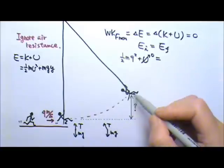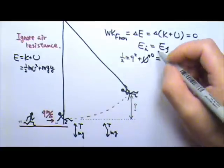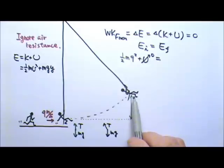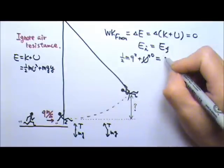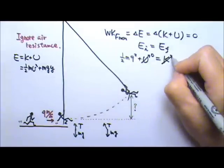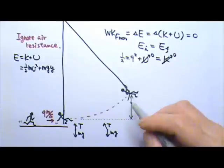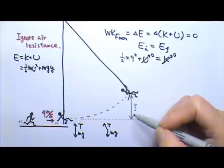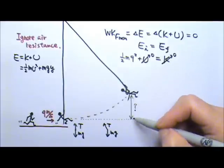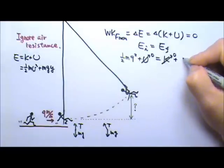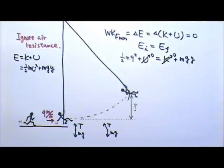At the end, that will be the maximum height. Is Tarzan moving at the maximum height? No, because this is a turning point. So the speed is zero, there is no kinetic energy at the end. But Tarzan is no longer on the ground. He is a height above ground. In fact, we are looking for this height. So it has the mgy.